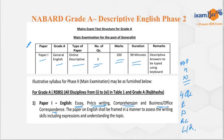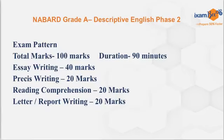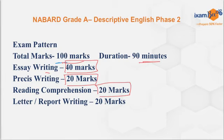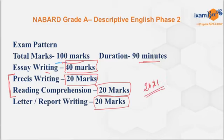When it used to be four questions, the marks distribution was like this — total 100 marks, duration 90 minutes. Essay writing 40 marks, one essay topic you need to choose and write. Précis writing 20 marks. RC 20 marks. And letter or report writing 20 marks. Usually, the passage for précis writing and reading comprehension used to be the same. But in 2021, there were only three questions — RC was not there.